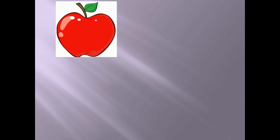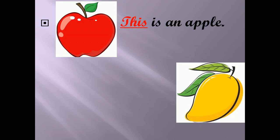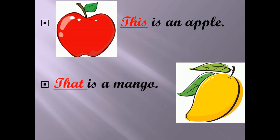Now we will repeat. What is this? It is an apple — tell me, what will come: 'this' or 'that'? The answer is 'this' — 'This is an apple.' Next picture is a mango. Mango is far, so for far what will we write? We will write 'that' — 'That is a mango.'